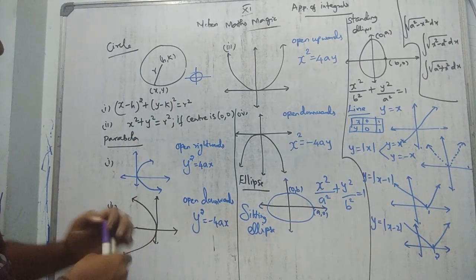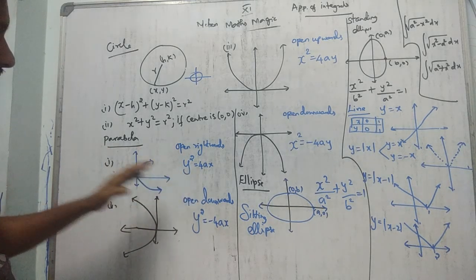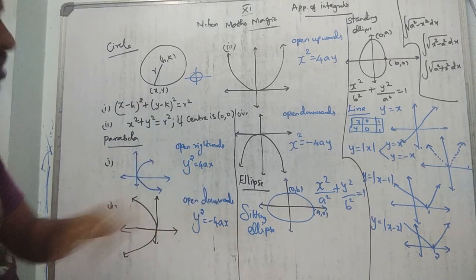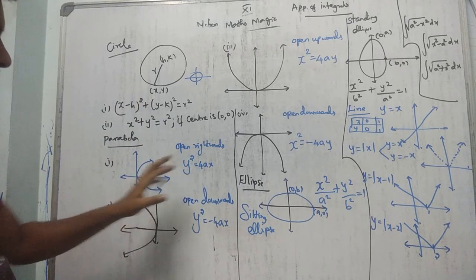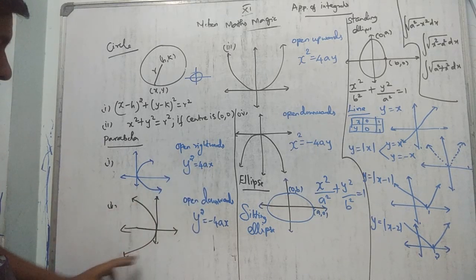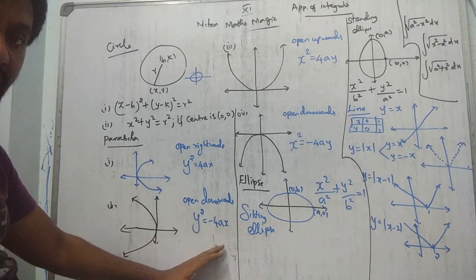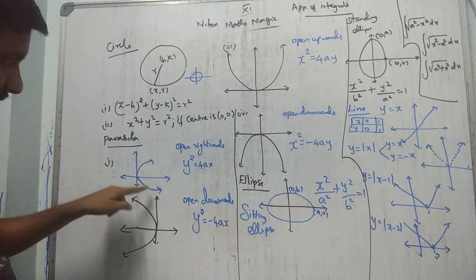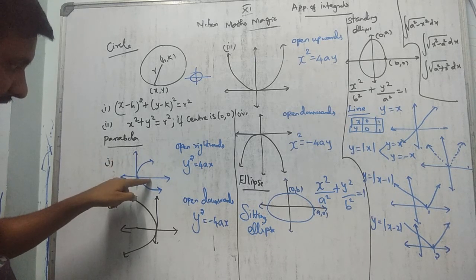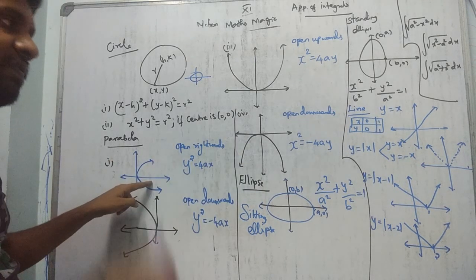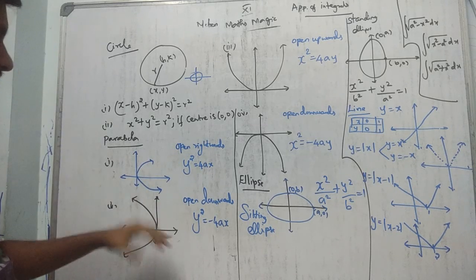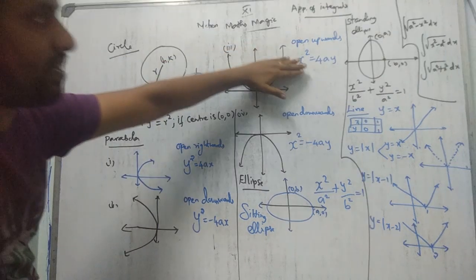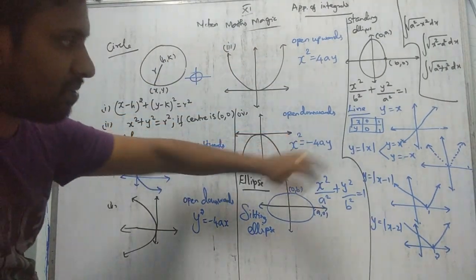Second: Parabola. There are four types. Open rightwards: y² = 4ax. Open leftwards: y² = −4ax. Open upwards: x² = 4ay. Open downwards: x² = −4ay. 'a' is at the vertex. For everything else, you can refer to the Class 11 conic sections chapter.